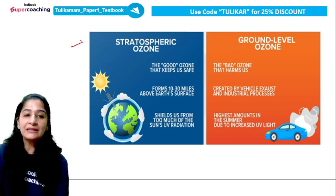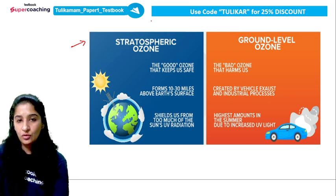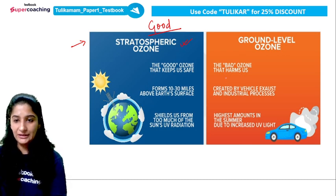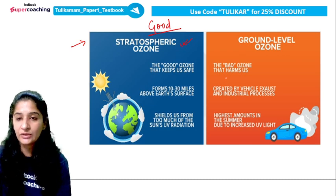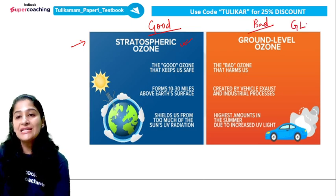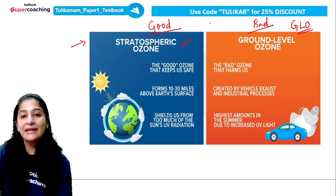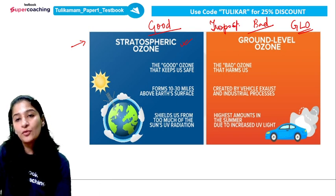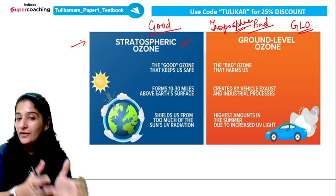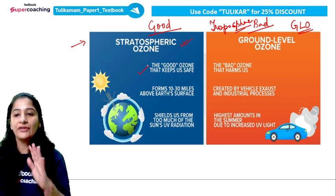If we talk about good ozone, another name used for it is stratospheric ozone. We also call good ozone stratospheric ozone because it is found in the stratosphere. And bad ozone is called ground level ozone, or GLO — it stays around us in what we call the troposphere. So location-wise, good ozone is in the stratosphere and bad ozone is in the troposphere.